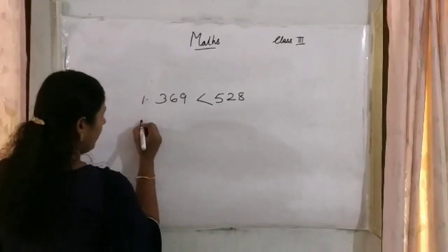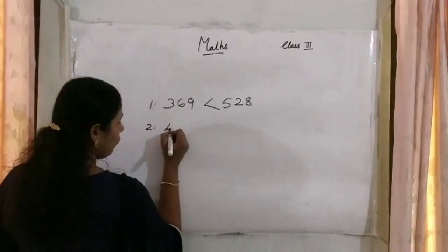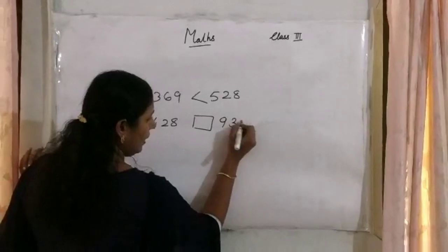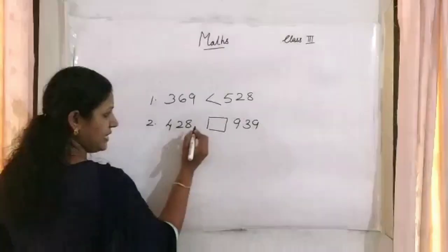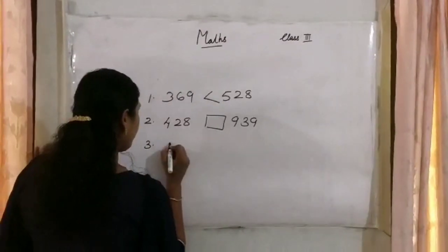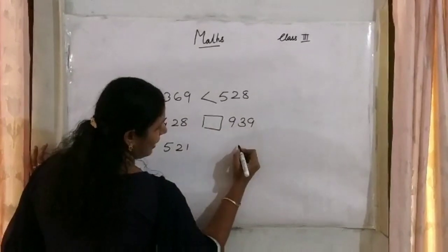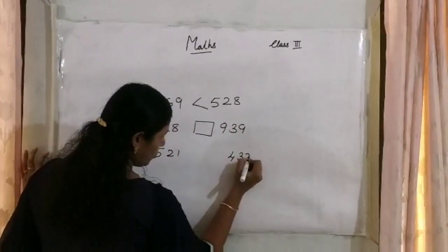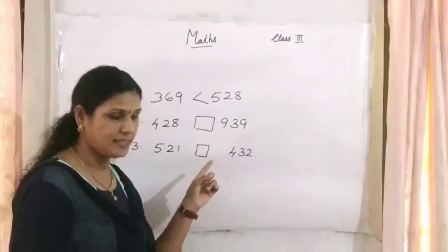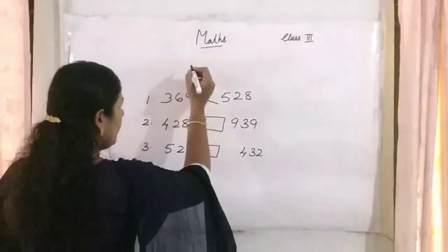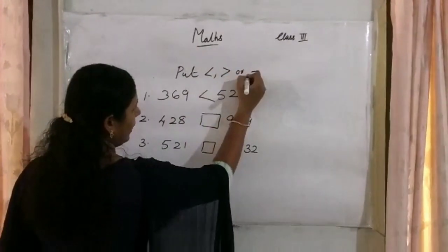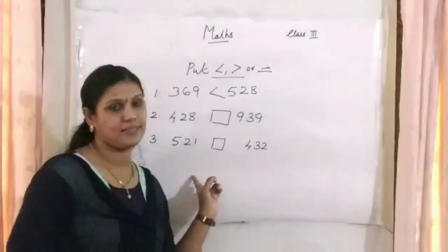Question 1: compare 428 and 939. Question 2: compare 521 and 432. You can do these questions yourself — you have studied this, so you can do them on your own. Put the greater than, less than, or equal sign.